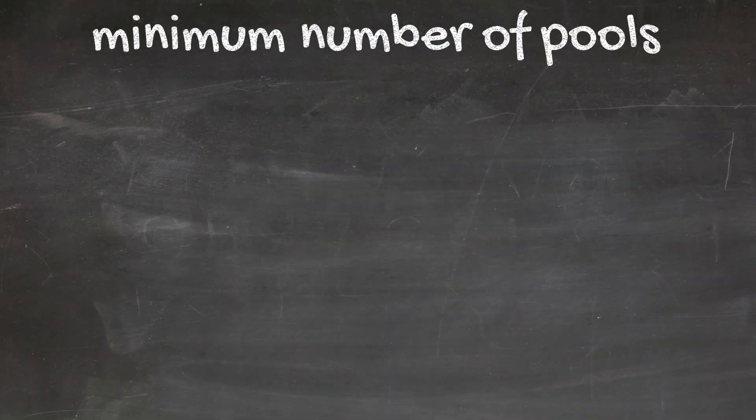If the reward pot for an epoch is 1,000,000 ada and the desired number of pools is 1,000, one pool can only get 1,000 ada at most, no matter if there are 5 or 1,500 pools in reality.